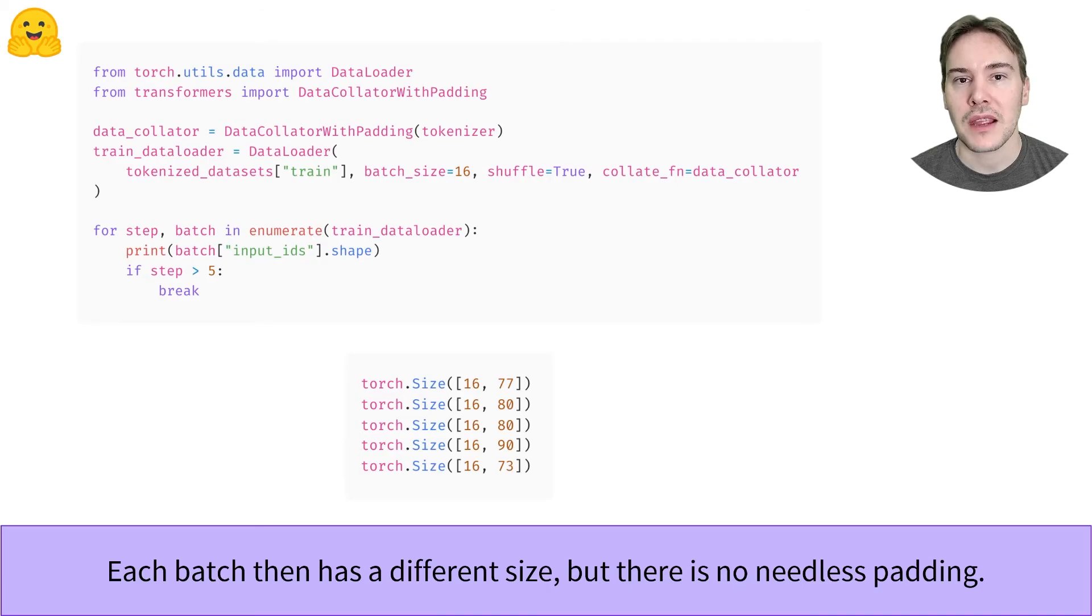We pass it to the PyTorch data loader as a collate function, then observe that the batches generated have various lengths, all way below the 128 from before.